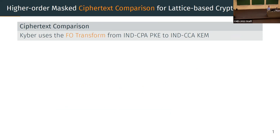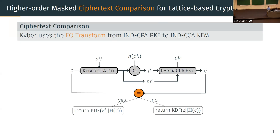The ciphertext comparison operation is an integral part of the Fujisaki-Okamoto (FO) transform. This is a generic transform that can convert a CPA-secure encryption scheme into a CCA-secure key encapsulation mechanism. After you decrypt your ciphertext you get a plaintext, which you re-encrypt into a re-encrypted ciphertext, then compare it with the originally submitted ciphertext. If they match, all seems good; if they don't match, you might be under a CCA attack and would abort.